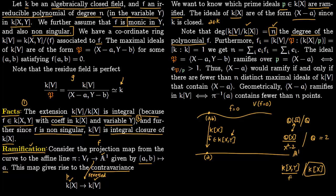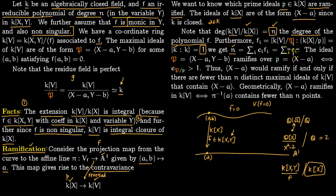Now we talk about residue fields. The residue field kV/p is just k, and k[x]/p for p=(x−a) is also k by the evaluation map. So the degree [fᵢ] of the residue fields is just 1. Recalling the formula n = Σ eᵢfᵢ, since each fᵢ=1, we get n = Σ eᵢ — the degree of extension equals the sum of all ramification indices.